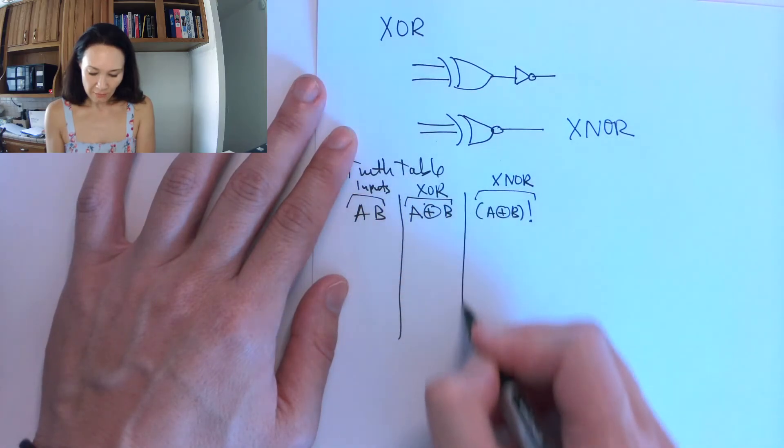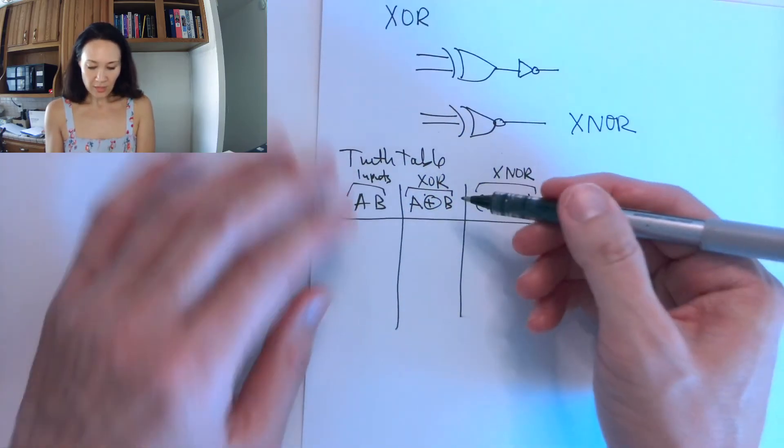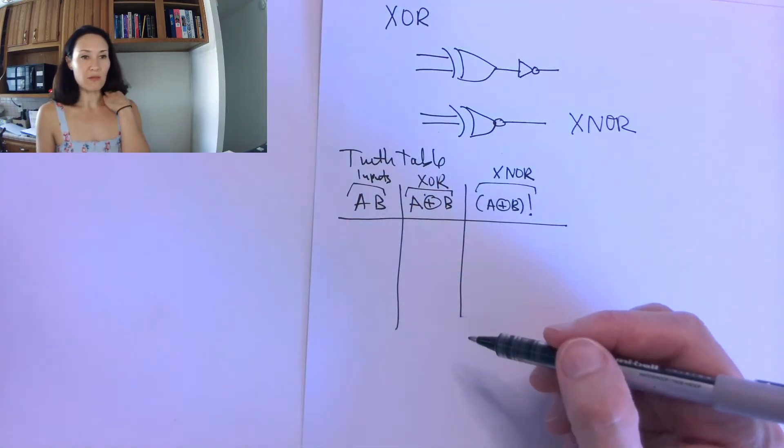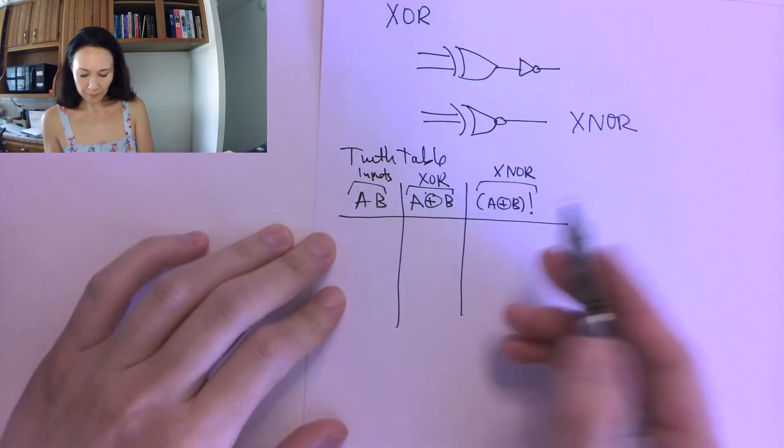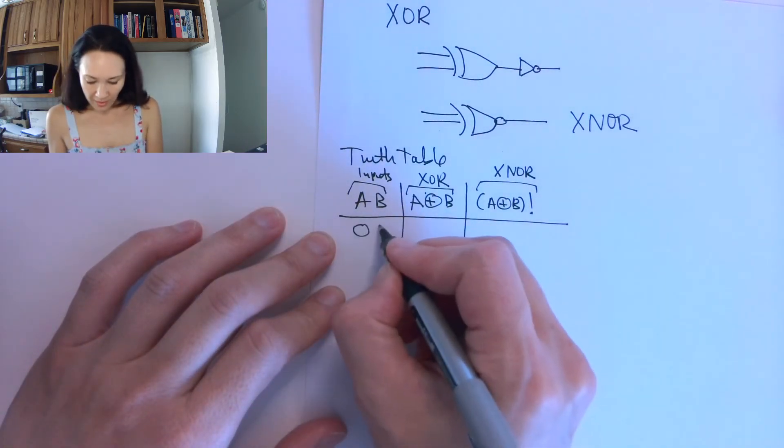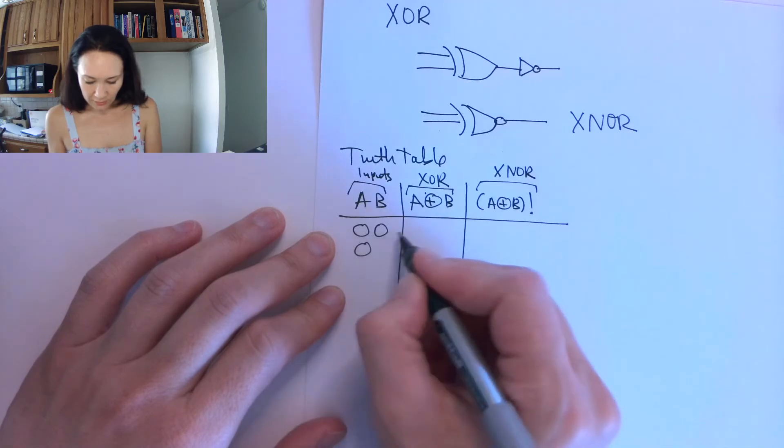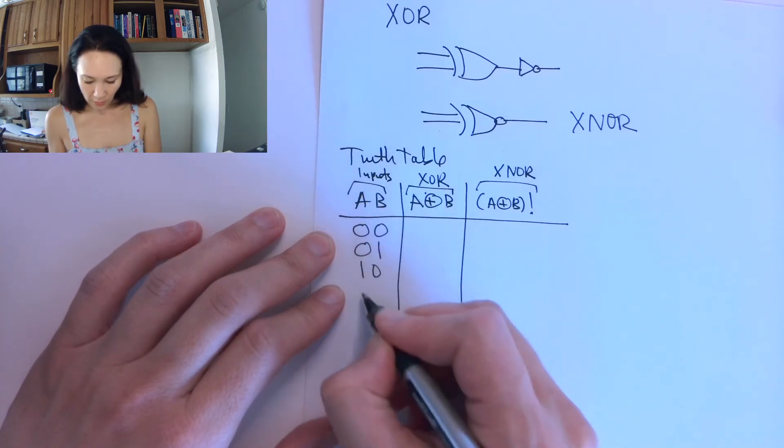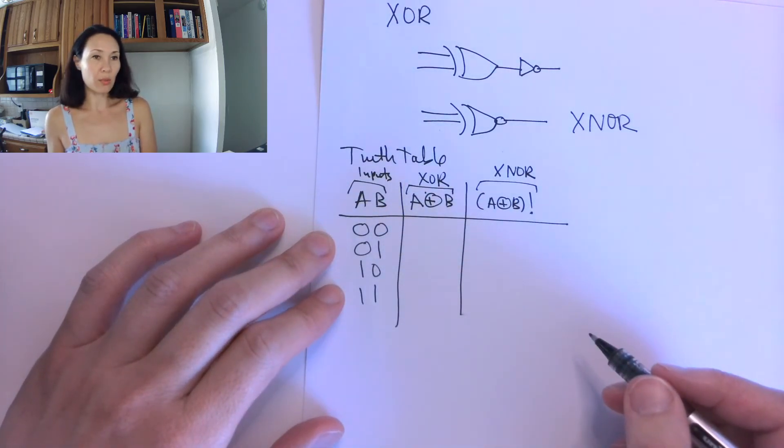Like I said before, on a truth table, you don't have to have this intermediary column, but if it helps you, totally put it on there. All of our possible combinations of inputs are 0, 0, 0, 1, 1, 0, 1, 1, for a 2-input XNOR.